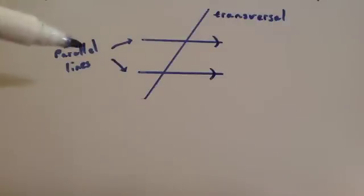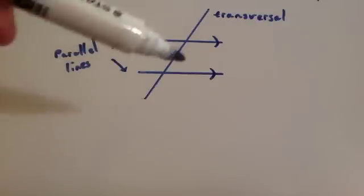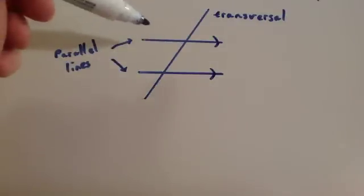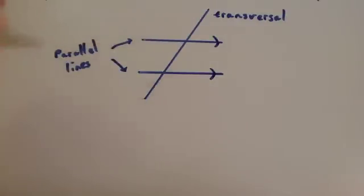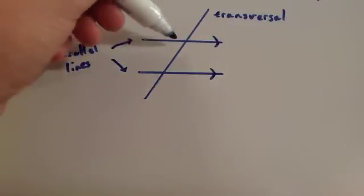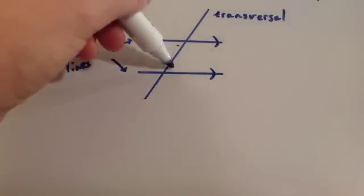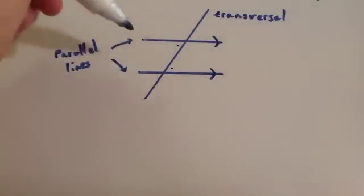This video we're going to be looking at parallel lines and angle properties whenever you've got a transversal — that's a line that cuts the parallel lines. If you look at this, you can see that some angles look the same. For instance, this one looks similar to this one.